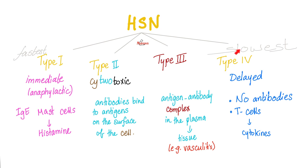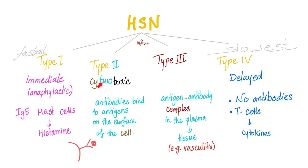Which one is the fastest? Type 1. Which one is the slowest? Type 4. Type 1 in a few words: immediate anaphylactic IgE. Mast cells rupture and degranulate, releasing histamine, and histamine can give you the symptoms of anaphylactic shock. Type 2 is cytotoxic — I have antibodies that are bound to antigens on the surface of the cell. That's why type 2 is cytotoxic.